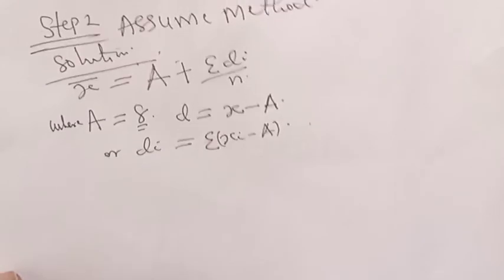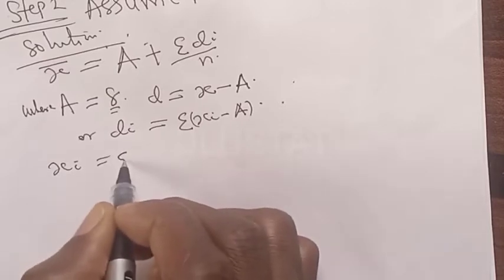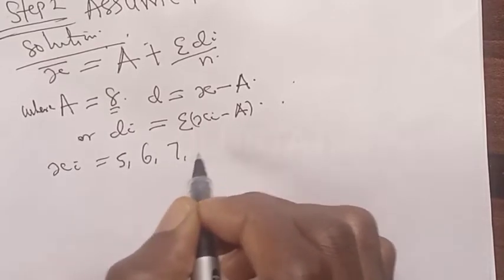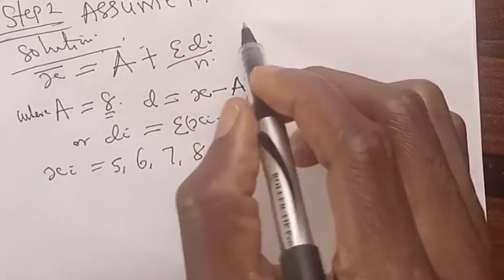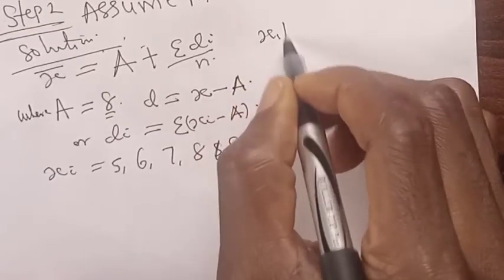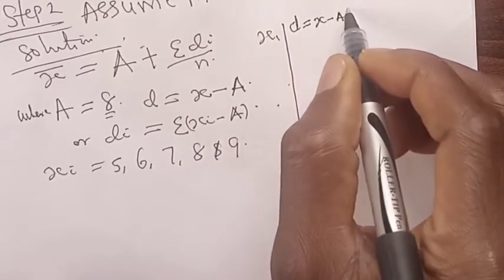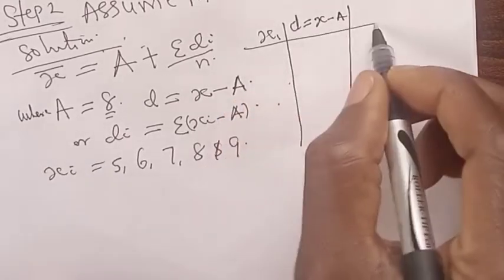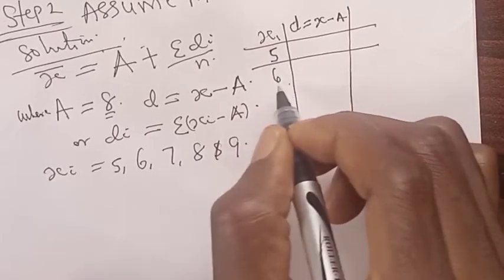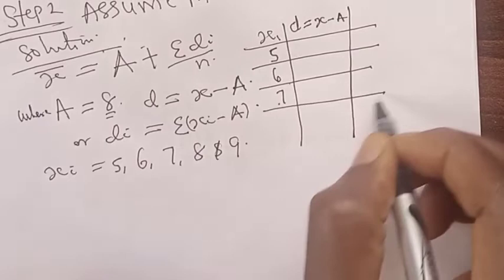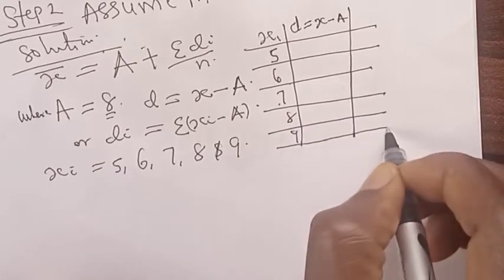Therefore, we have our xi to be 5, 6, 7, 8, and 9. Let's form a small table here. xi, our di, which is equal to x minus A. First one is 5, second one is 6, the third is 7, fourth 8, and the last is 9. Remember, this is ungrouped data.